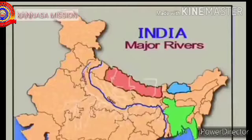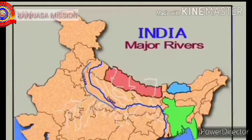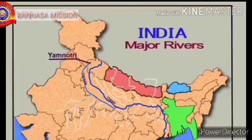River Yamuna is the second largest tributary of Ganga. It originates at Yamunotri and joins the Ganga at Allahabad.